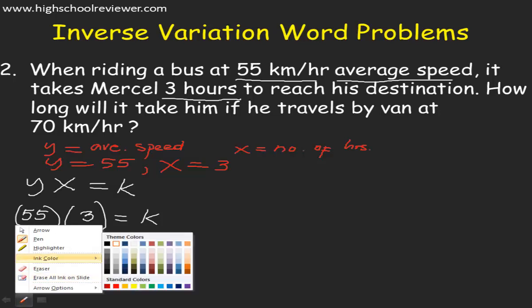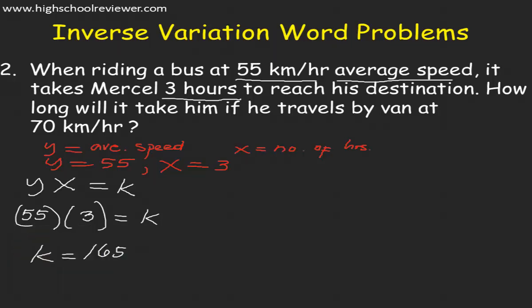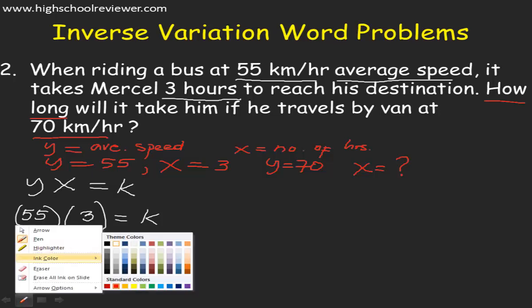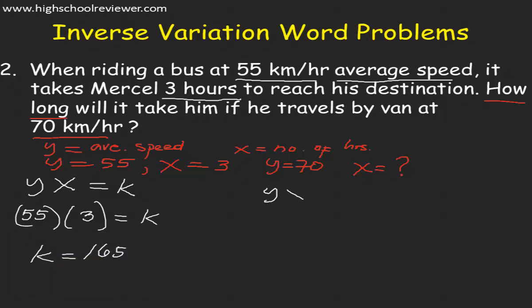We will find the second values of Y and X. The question asks how long will it take, so X is the unknown. Our Y will be equal to 70 kilometers per hour. Using the equation Y multiplied by X equals K, our Y is 70, X is the unknown, and K is 165.